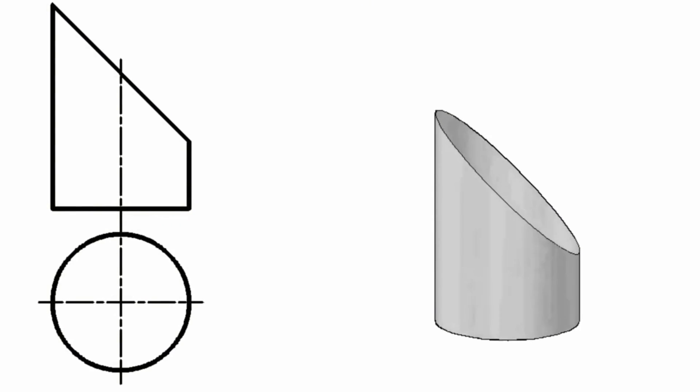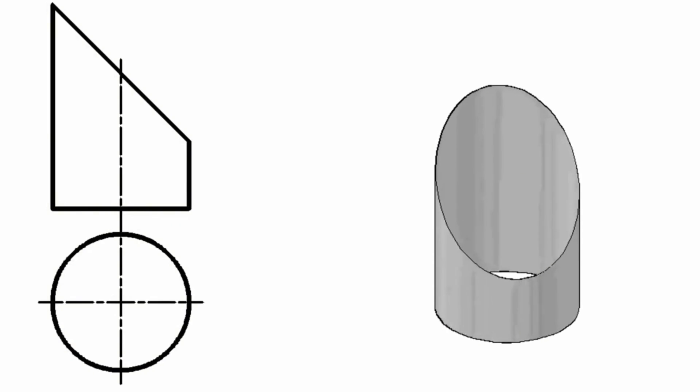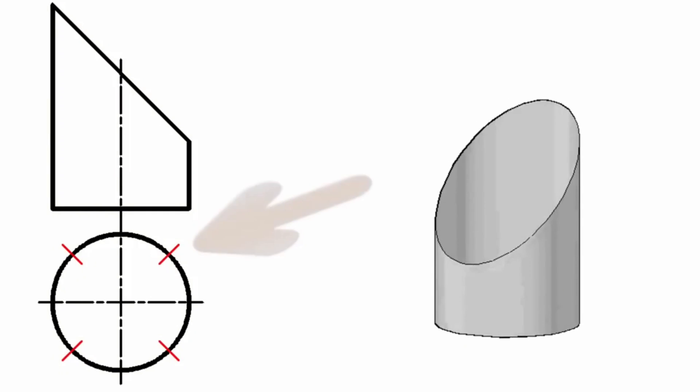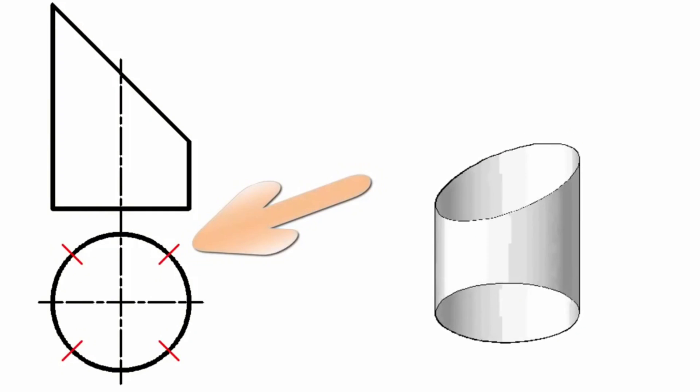This is a pipe that has been cut at a 45-degree angle. This is the perimeter showing the top view of the pipe.